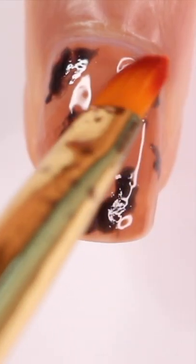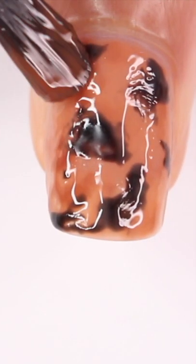With a brush as well. After I cured that, I'm pretty much going to repeat this whole process again. So I started off with that sheer brown, added a little bit more brown, and then ended with the black.